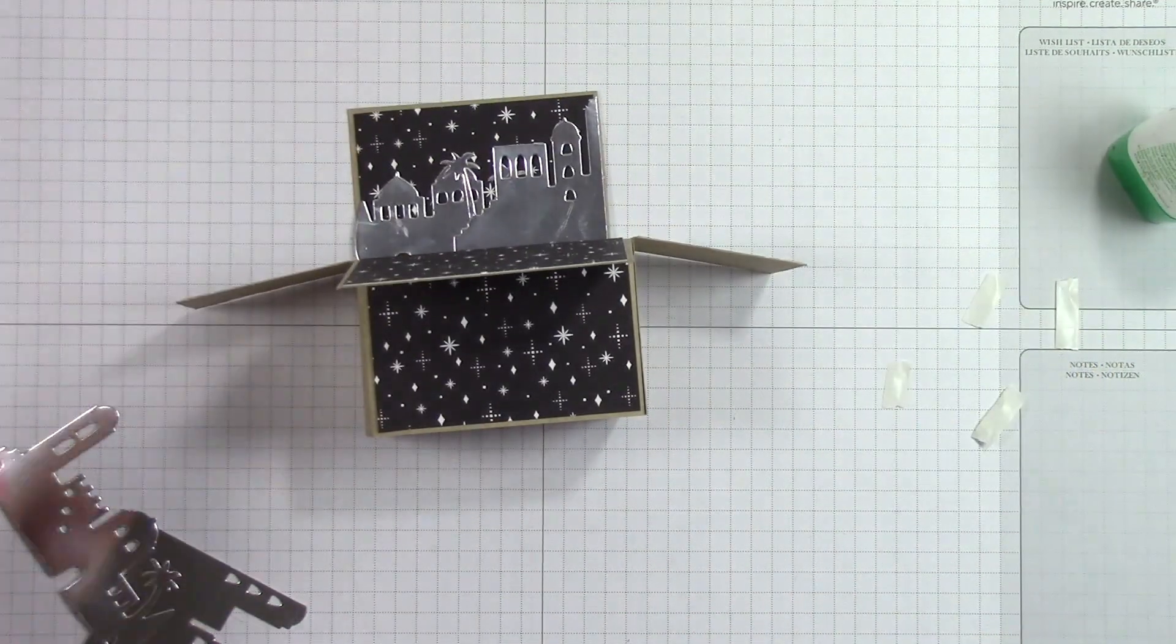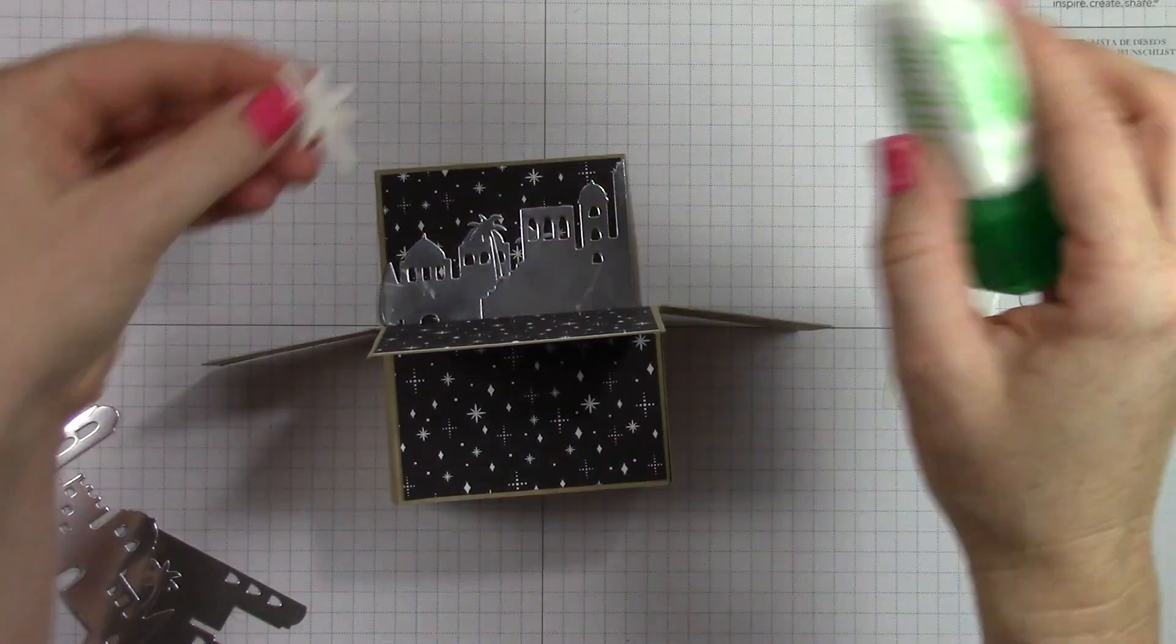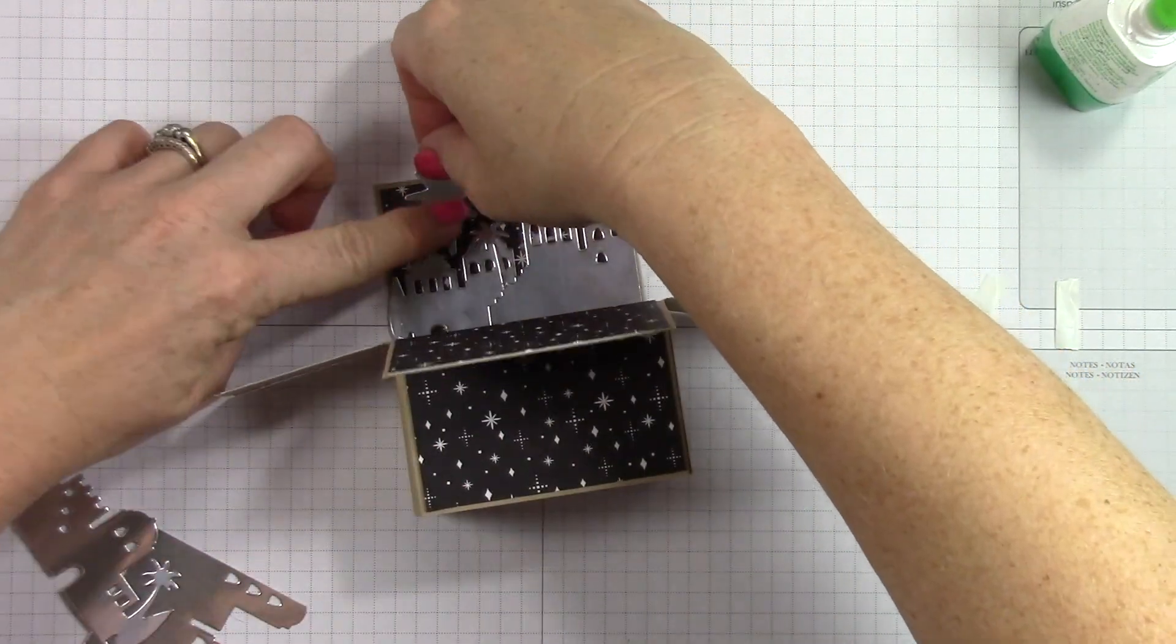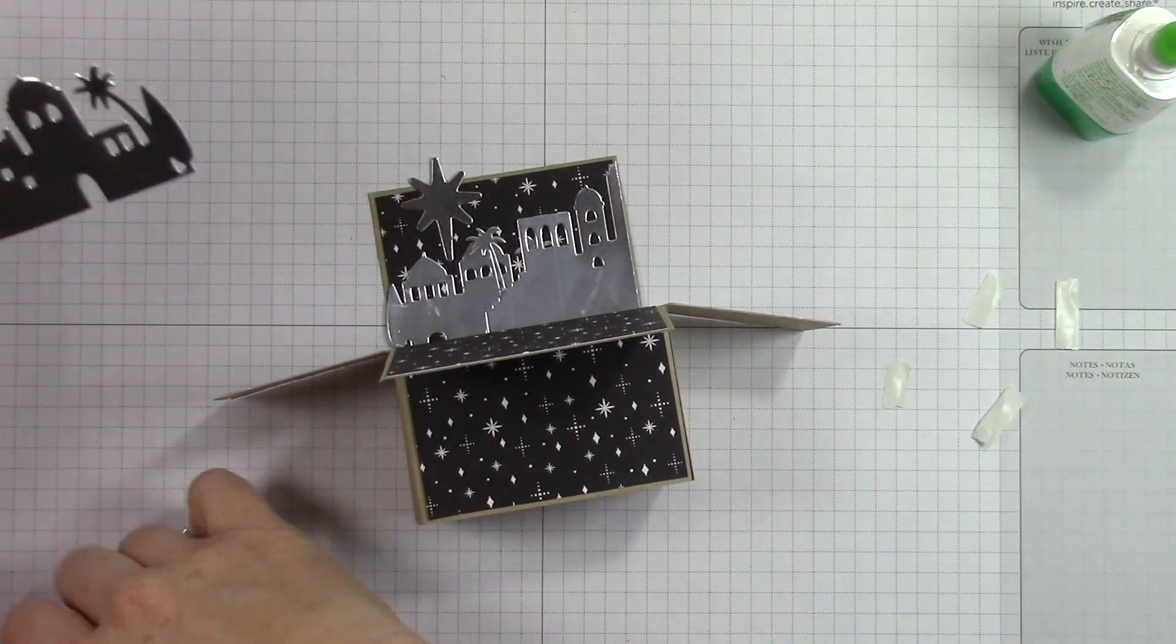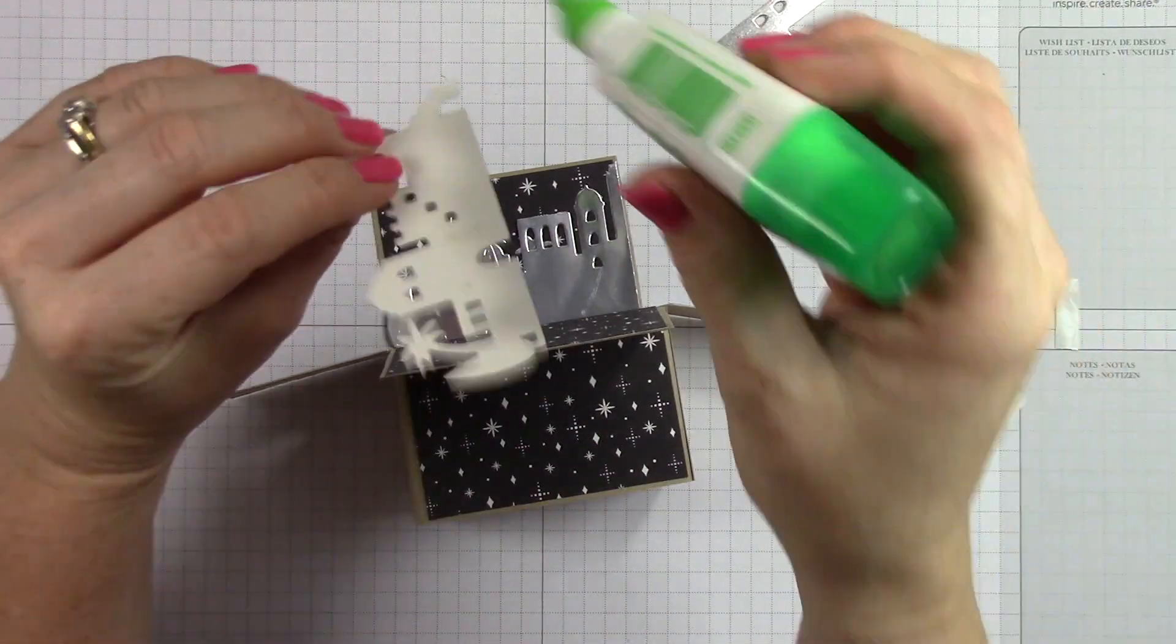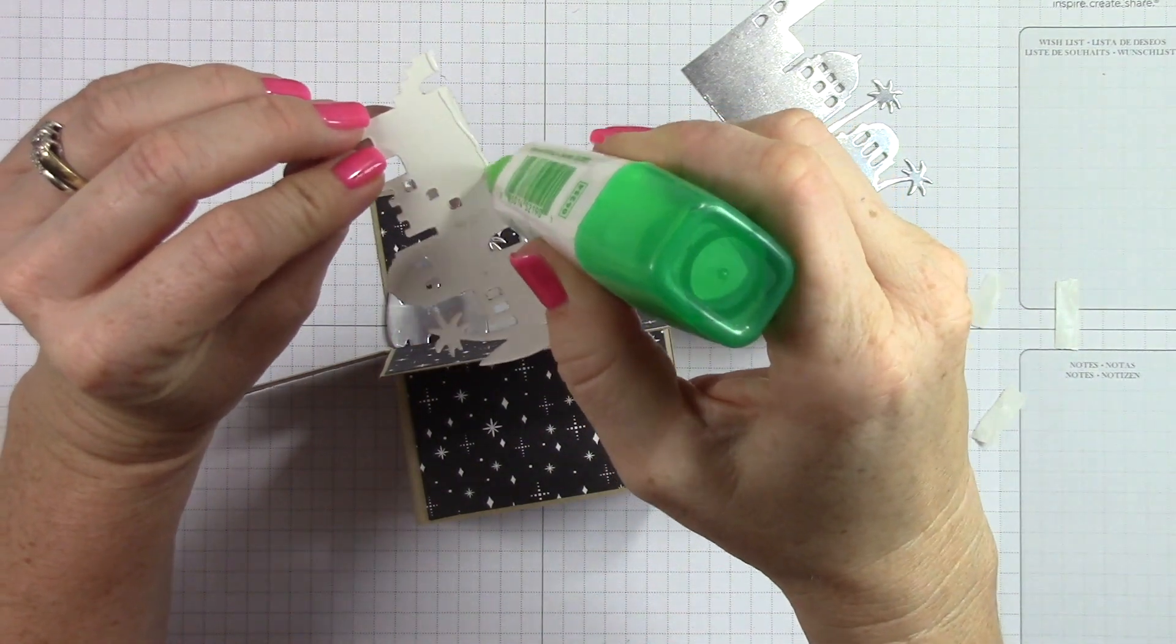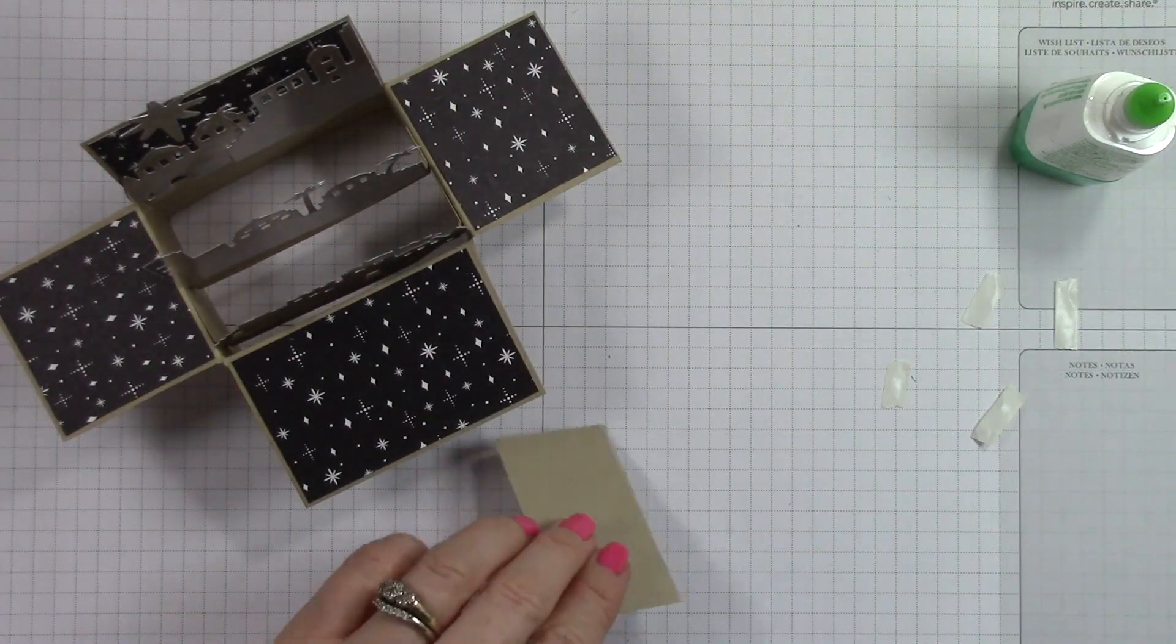Then I'm using the little star that comes in this framelit set as kind of the north star, the guiding star. And I'm placing it on the top of the box and it sticks up just a little bit, but that's okay because I made this box small enough that it will fit in a regular envelope. And even with that little bit sticking up out of the top, it still fits perfectly. And I will show you that. So there it is. I've just glued my pieces to the insides there.